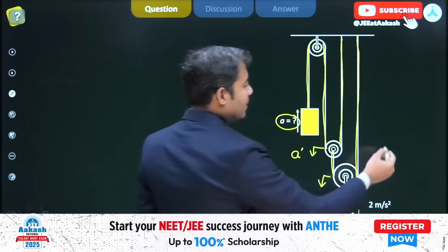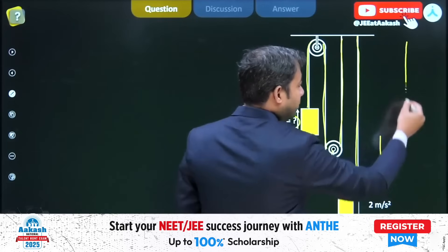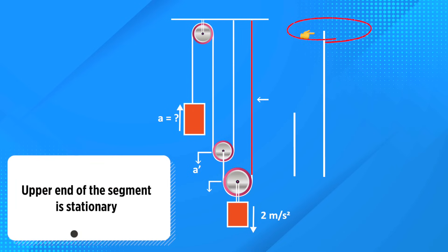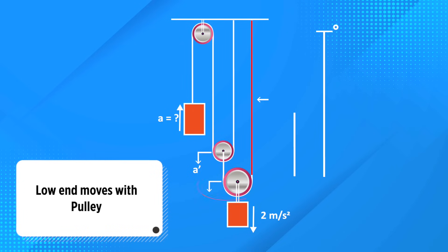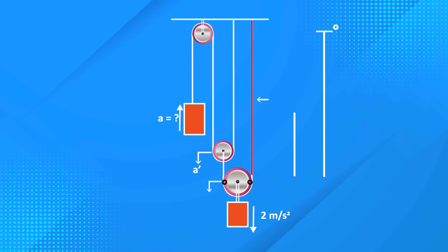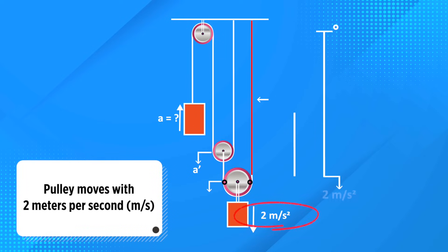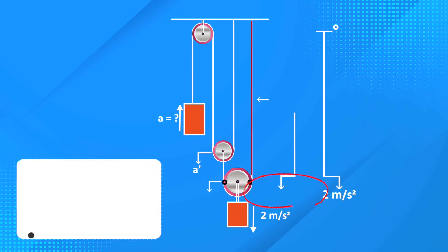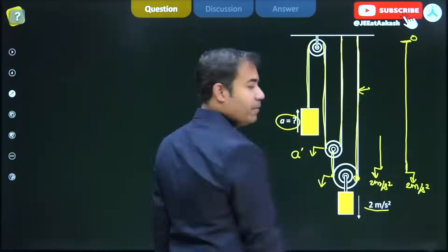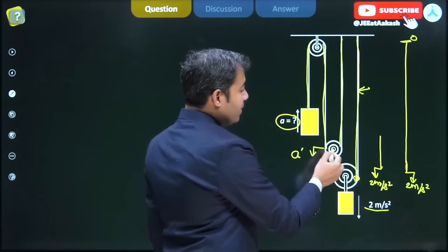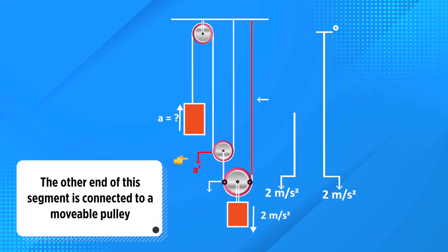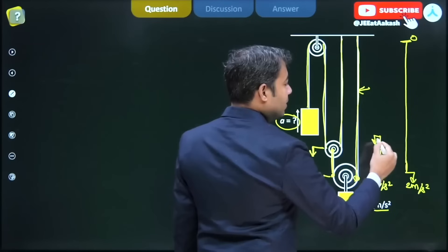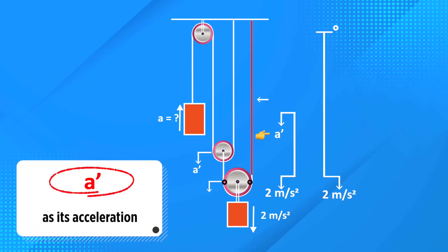Step one: We break this string into two segments. The upper end of the segment is stationary, the lower end moves with a pulley. As the pulley moves with 2 meters per second squared, we write 2 meters per second squared here. This end will also start moving at 2 meters per second squared. The other end of this segment is connected to a movable pulley which is moving with a', so this end has a' as its acceleration.